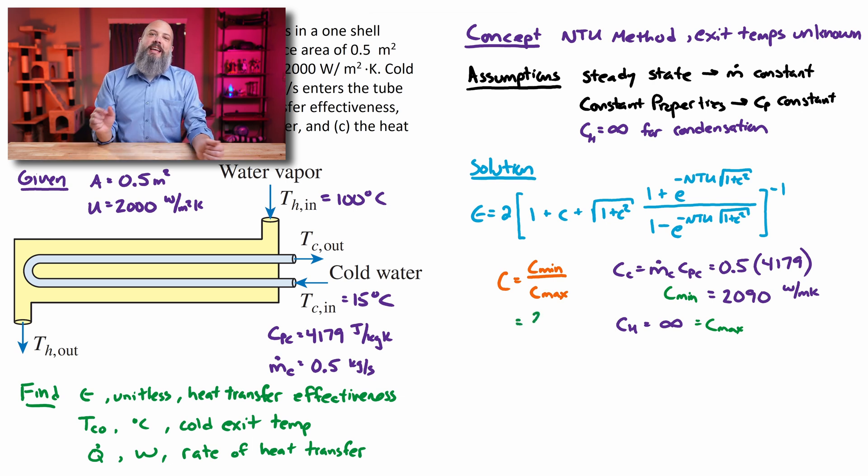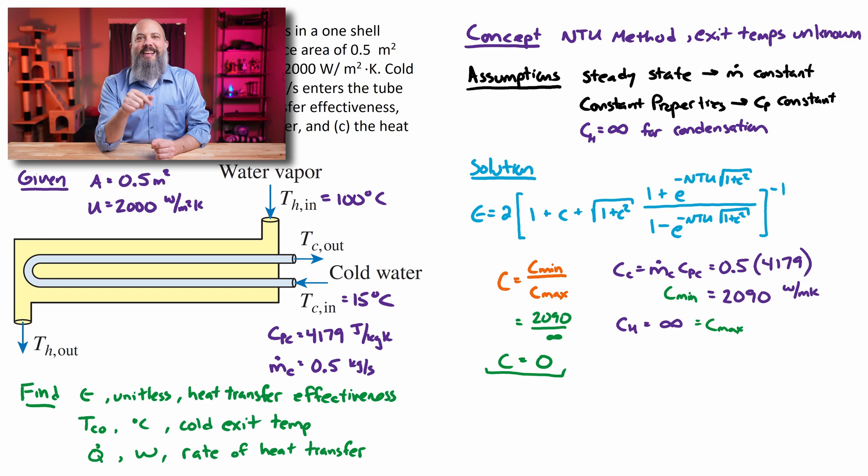This lets us calculate that C minimum is 2,090, because 2,090 is lower than infinity, so C max is infinite. So then this ratio C, or CR, the minimum C divided by maximum C, 2,090 divided by infinity, C is going to be zero. Whenever one of your fluids is going through a phase change and it's going to have an infinite value for C, the heat capacity ratio is going to be zero.